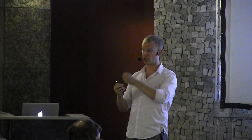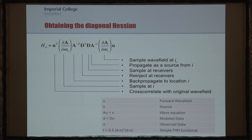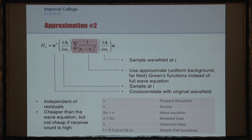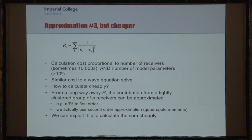This leaves us with an expression that is much cheaper than calculating wave propagations, though we can have a lot of receivers. The calculation cost is now the number of model parameters times the number of receivers — roughly a million times ten thousand — which is similar in cost to a wave equation solve. So we need a way to calculate this cheaply. The key observation is that from a long way away, a group of receivers contributes to this sum in a very similar way, so we can approximate a group of N receivers far away as simply N over r squared in the summation.